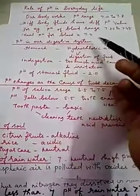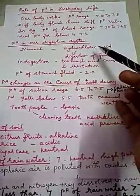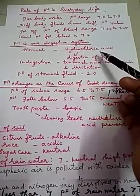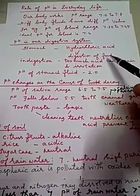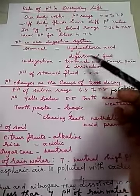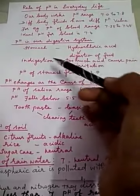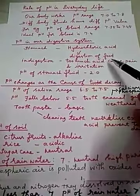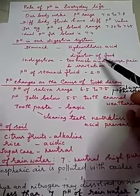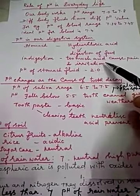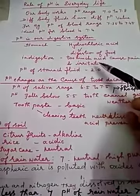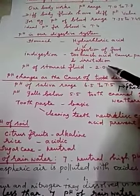The pH in our digestive system: our stomach produces hydrochloric acid, which helps in the digestion of food without causing irritation in the stomach. During indigestion, the stomach produces too much acid and causes pain and irritation. The pH of the stomach fluid is 2.0.